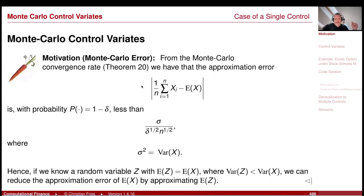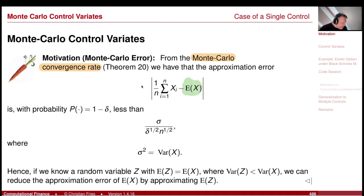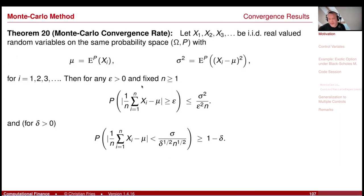Monte Carlo control variates. If you recall the Monte Carlo convergence rate, we have an estimate for the error between our true solution — the expectation that we would like to calculate — and our Monte Carlo approximation. If you look back at Theorem 20, that was our Monte Carlo convergence rate, formulated by sequences of IID random variables.